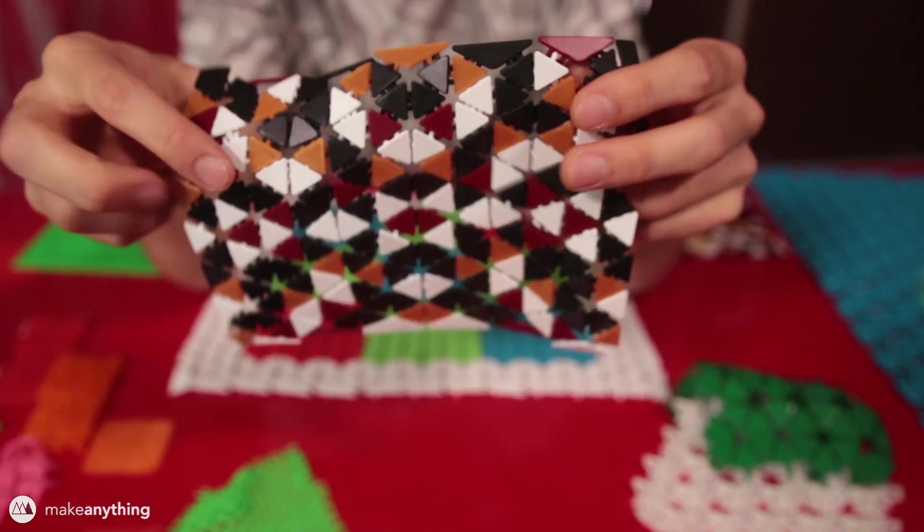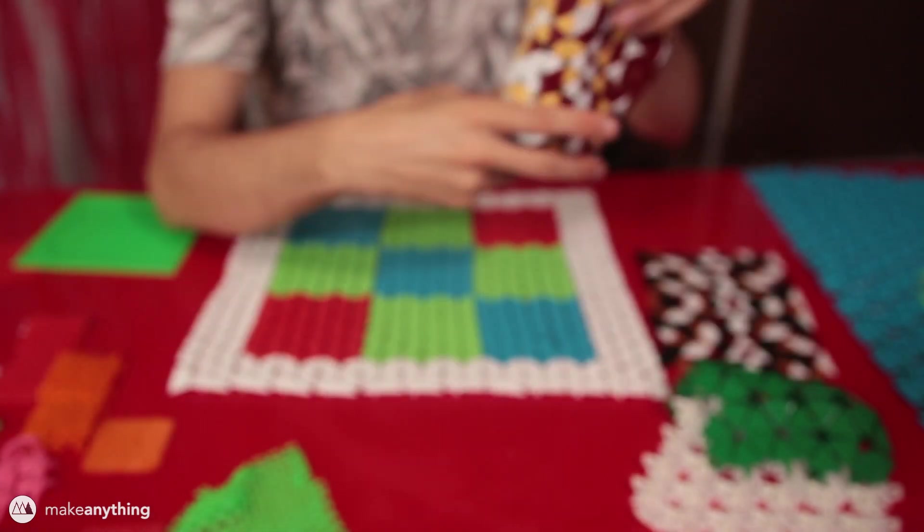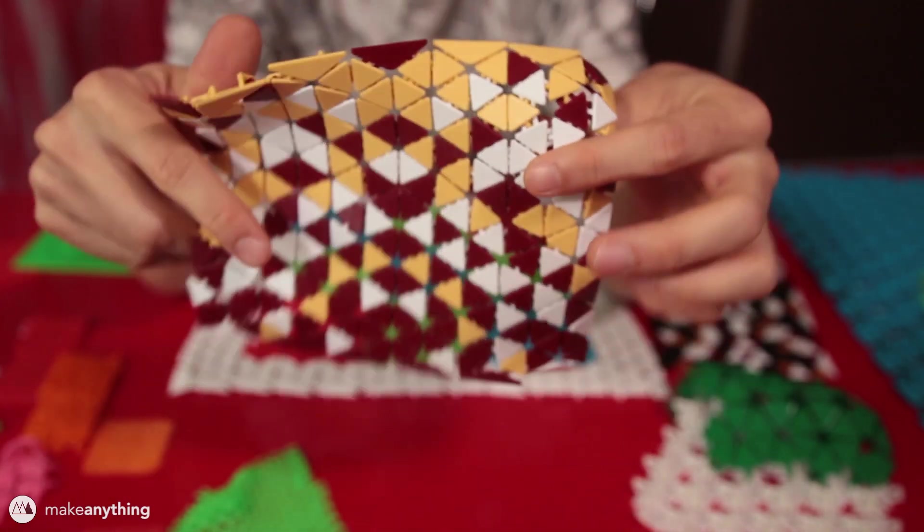I'm using Matterhackers Pro PLA in burgundy gold black and white. I also printed out this second version using their blonde yellow PLA and I think that gives it a really beautiful autumn theme.